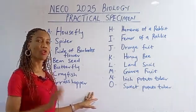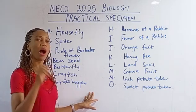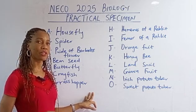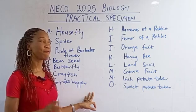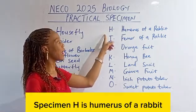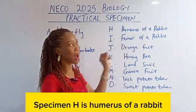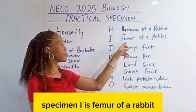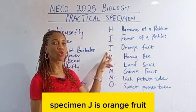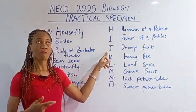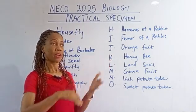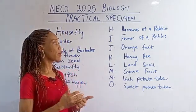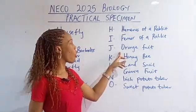Make this channel your best friend and follow through. I'll be sending out important information for physics, chemistry, biology and mathematics. Specimen H is humerus of a rabbit, specimen I is femur of a rabbit, specimen J is orange fruit. For WAEC 2025 it was a transverse section, so this time it is a full orange fruit — they didn't specify how we should cut it.